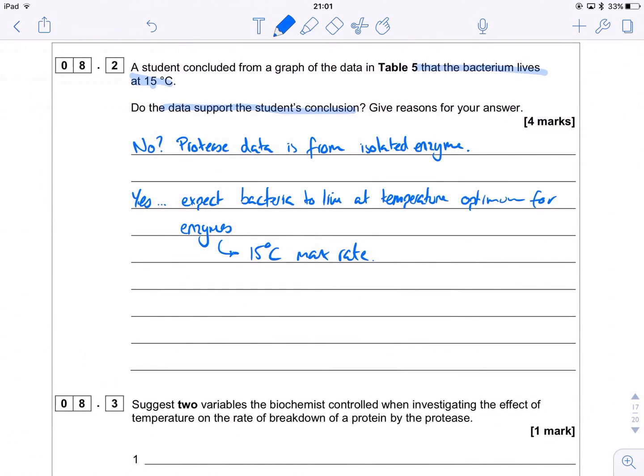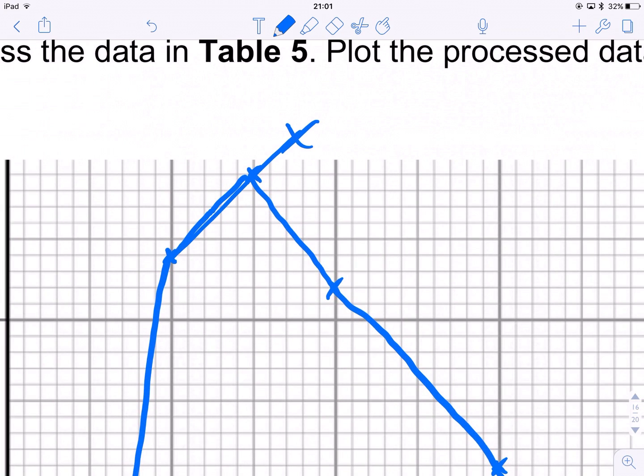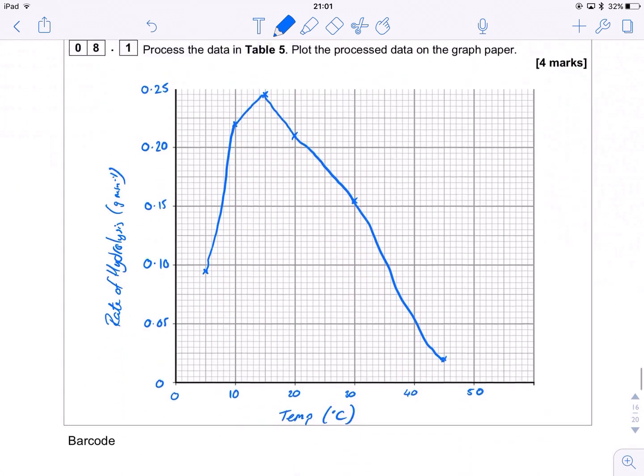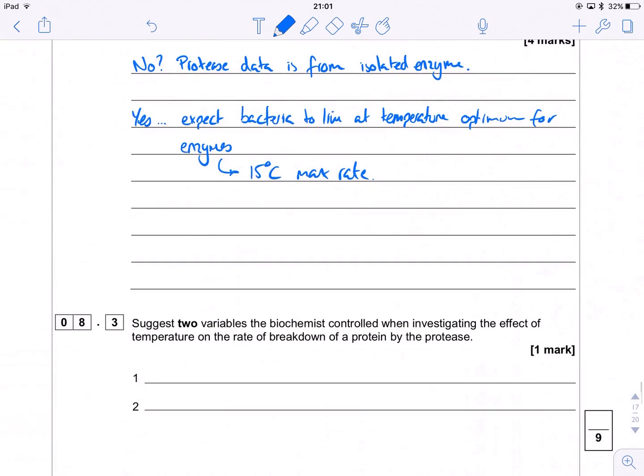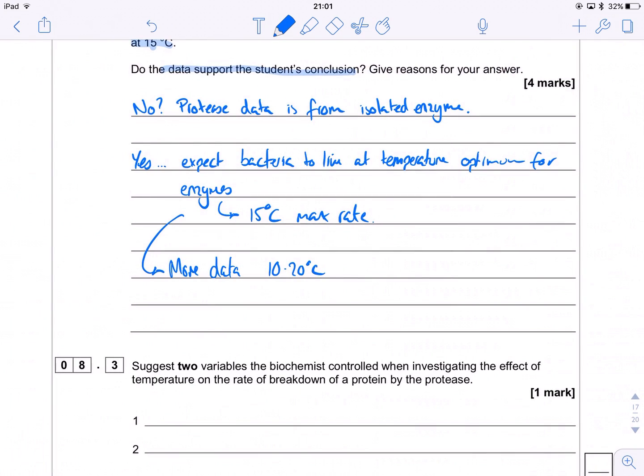However, we don't know where the peak truly is. We don't know if this continues up to here. We don't know if it peaks here and goes down. We're just not sure. So what we need to do is we need further data at smaller intervals of temperature between 10 and 20 degrees C. So we need more data for 10 to 20 degrees C to be able to make sure. Because the optimum might be at 12. It might be at 16.2. We just don't know.